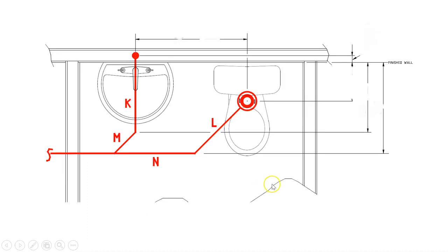This is a short review on 45 degree offsets. What we're looking at here is a plan view of a powder room which has a water closet on the right hand side and a domestic lavatory on the left hand side. What this plan view is showing with our red lines is our sanitary drainage lines for those two fixtures.